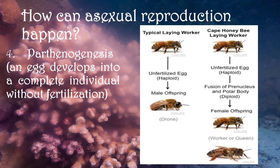The fourth way through which asexual reproduction can occur is by parthenogenesis. In parthenogenesis, an egg develops into a complete individual without fertilization. Some animals that undergo parthenogenesis are bees, aphids, and reptiles.